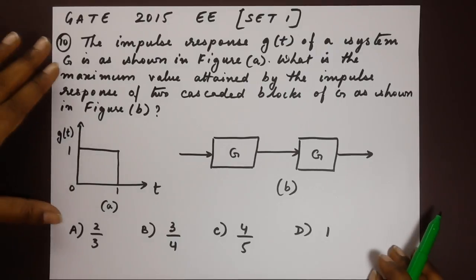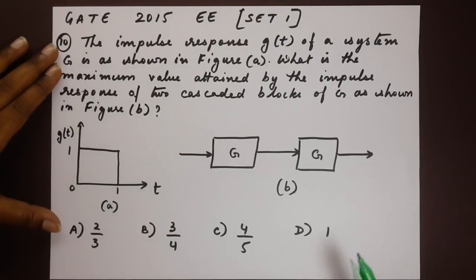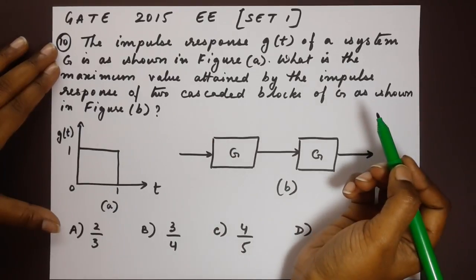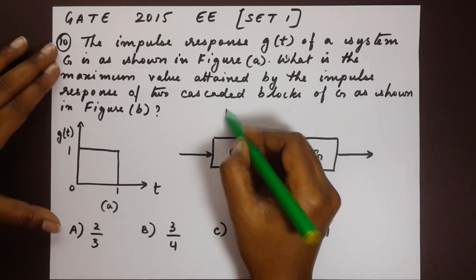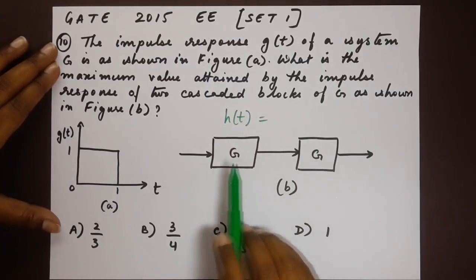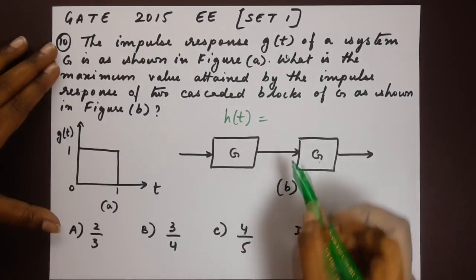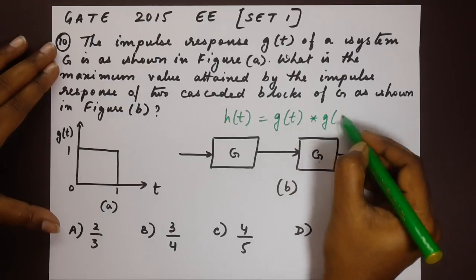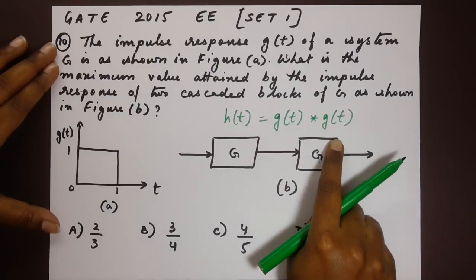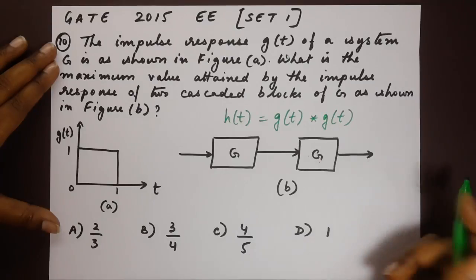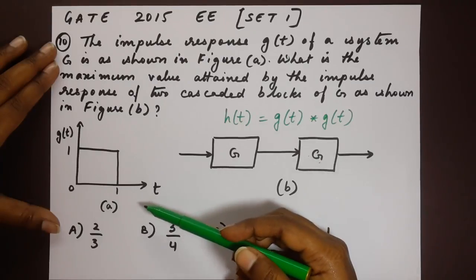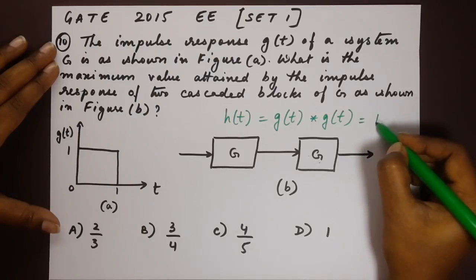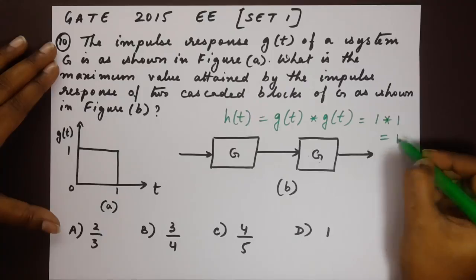So what we need to think about is the expression if we have to find out the maximum value attained, that's h of t. And for two cascading blocks here we would have g of t into g of t. The final value would be a multiplication of g of t into g of t. And looking at the impulse function here, the graph here, that is 1 into 1 which is 1.